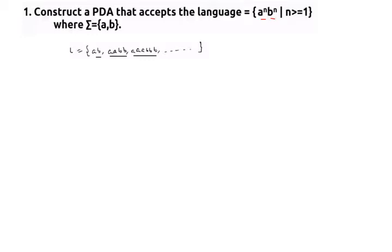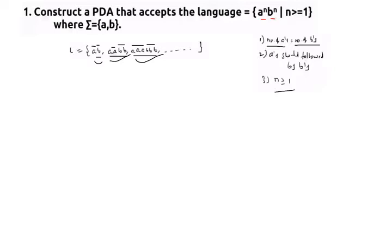There are some constraints to remember: the number of a's and number of b's are always going to be the same, since it is a^n and b^n. If there are three a's there should be three b's; if there are two a's there should be two b's. Also, n must be greater than or equal to 1, so epsilon is not going to be accepted. Additionally, a's should always be followed by b's.